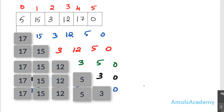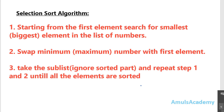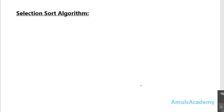The algorithm summary: first, starting from the first element, search the smallest element in the list and replace it with the element in the first position — find the minimum or maximum value and place it at the zeroth index. Next, take the sublist excluding the first value, find the minimum value, and place it at index 1. This is repeated until the list is completely sorted. In the next tutorial we will discuss the Python program to sort numbers using selection sort algorithm. Thank you for watching, don't forget to subscribe.